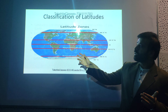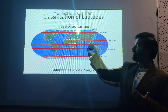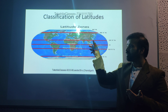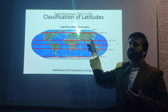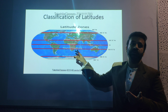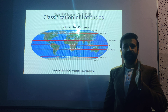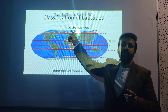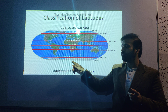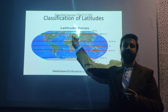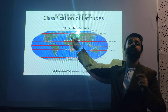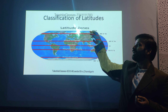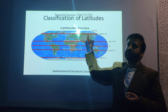Now let's see the zones based on latitudes. The equator is zero degrees. From zero to 23.5 degrees north is the Tropic of Cancer, and from zero to 23.5 degrees south is the Tropic of Capricorn. This zone is called the tropical zone. 23.5 degrees north is the Tropic of Cancer, 23.5 degrees south is the Tropic of Capricorn. From 23.5 to 66.5 degrees is called the temperate zone, also called middle latitudes — remember this because exams now ask 'middle latitudes' instead of 'temperate'.